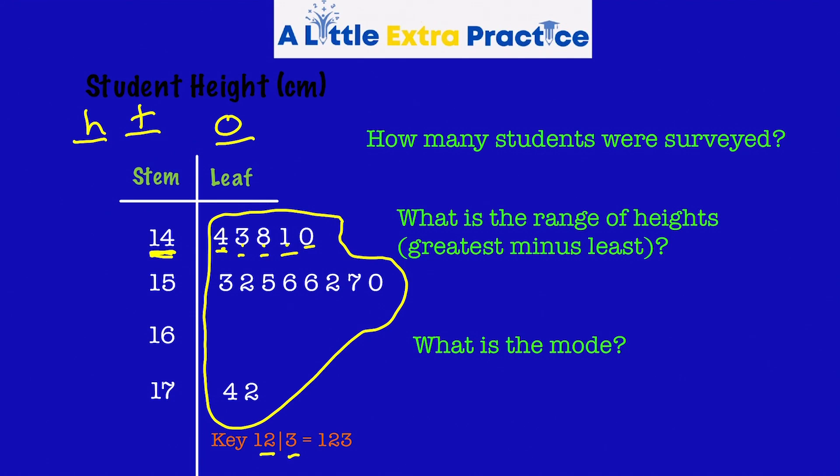1, 2, 3, 4, 5, 6, 7, 8, 9, 10, 11, 12, 13, 14, 15, in the leaf section. So that means that there's 15 sets of data. In this case, 15 students were surveyed.